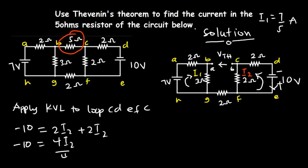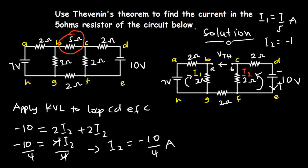Dividing both sides by 4 gives I2 equal to minus 10/4 amperes.